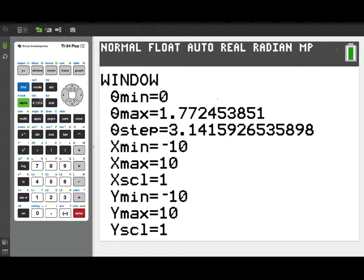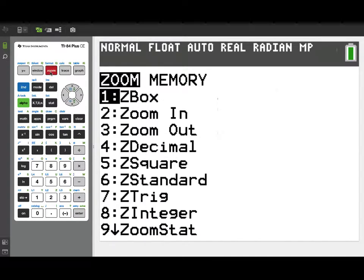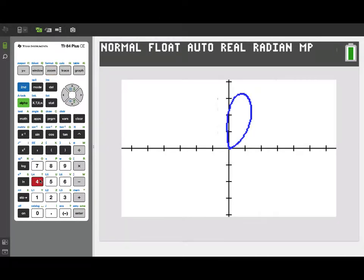The theta step will be the increments that theta steps through as we plot the curve. I'd like to have at least 100 points or so here, so I'm going to make my theta step value just the square root of pi, the length of our interval, divided by 100. It'll calculate that step size for us, and you can see it's a hundredth of my theta max. And then finally, let's do a zoom decimal window.